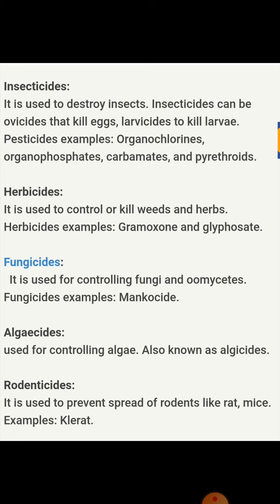Next is insecticides. As the name suggests, these are chemicals used to kill insects. Insecticides can be ovicides — 'ov' means kills eggs of insects — and larvicides, which are chemicals used to kill larvae. Examples include organochlorines, organophosphates, carbamates, and pyrethroids.